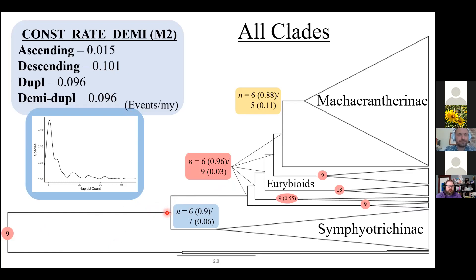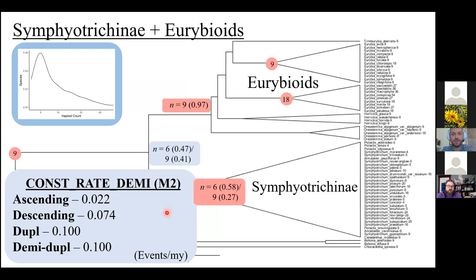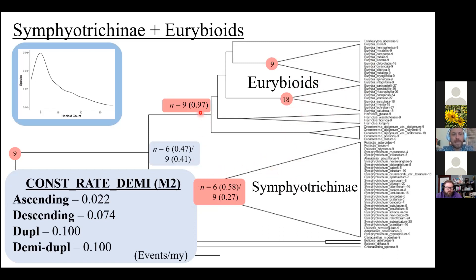When I prune off the Macarantherinae and rerun ChromoVol, the rate of ascending dysploidy and the rates of duplication and demi-duplication go up, while the rate of descending dysploidy drops—from about 0.1 on the full tree down to 0.074. Descending dysploidy does appear slower when only the eurybioids and Symphyotrichinae are considered, and now the ancestral states of internal nodes leading to the eurybioids are estimated with high probability to be nine, which is more expected given the distribution of counts within those genera.